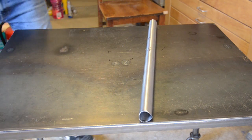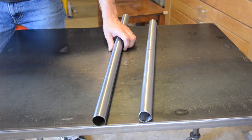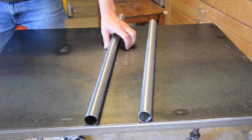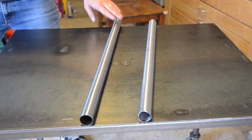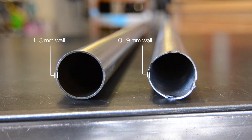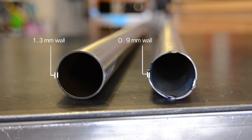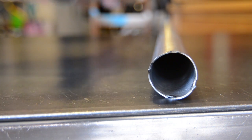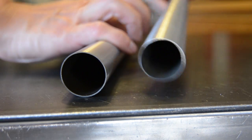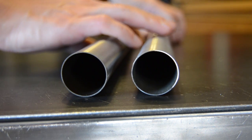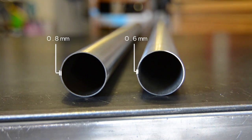Okay, here's the seat tubes, new one on the left and the old one on the right. The one on the left has a 1.3mm wall and the old one on the right has a 0.9mm wall. And then on the other side, we're looking at 0.8mm and 0.6mm.